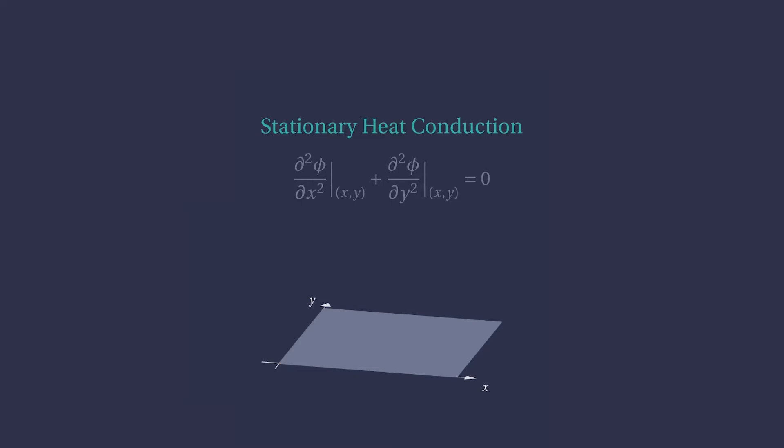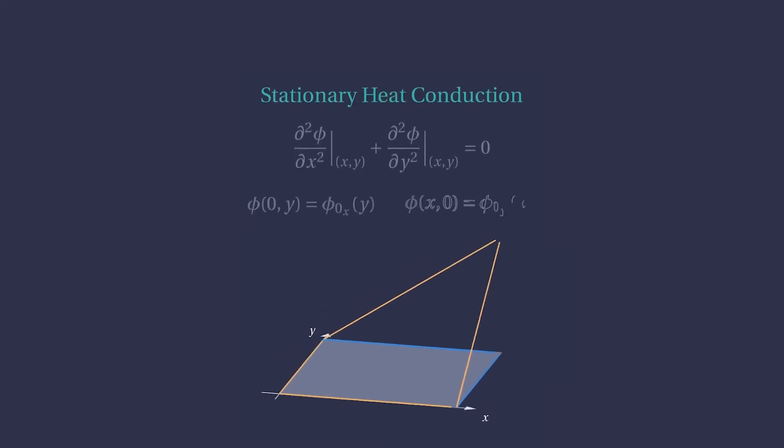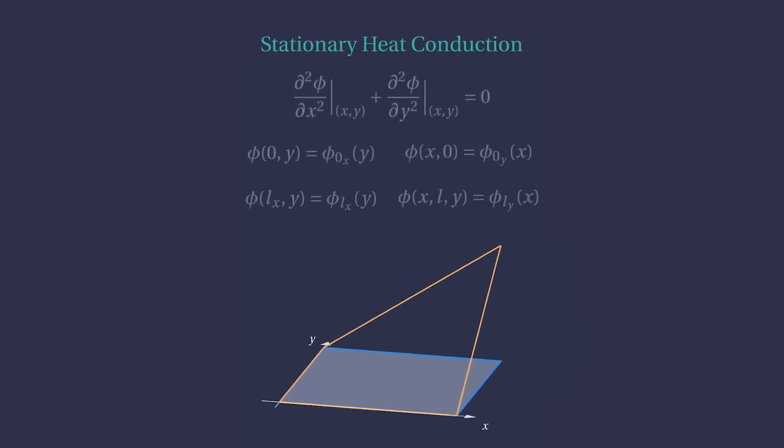In this example, we consider prescribed temperatures at every edge. We could just as well prescribe heat fluxes across the boundaries of the plate or a combination of the two. To apply the finite differences method, we break the domain using a regular grid, as we've talked about just a moment ago. We use n plus 1 points in each direction to do this.